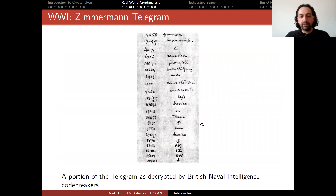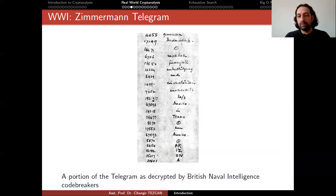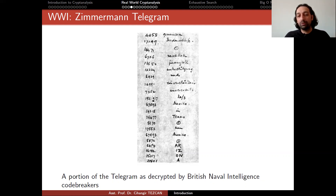A portion of the telegram as decrypted by British naval intelligence codebreakers is shown here. You can see the code numbers and the corresponding words from the codebook — German words where, for example, one code means 'and.' In the plaintext they needed to write the state 'Arizona,' but the codebook had no single code for that word. So they used four separate codes for 'AR,' 'IZ,' and so on to spell out 'Arizona.' This is how code-based encryption works.